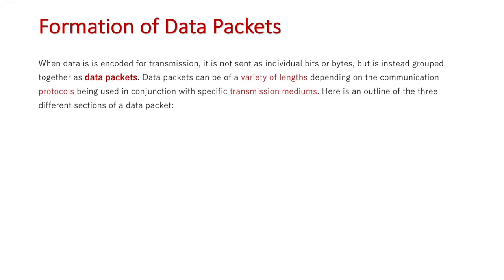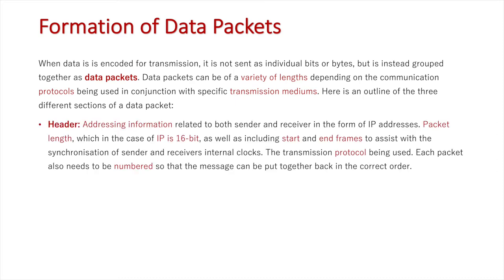Firstly is the header, which contains addressing information of both the sender and the receiver, in the form of an IP address. Each packet is at a specific length, and in the case of IP, that's 16-bit.